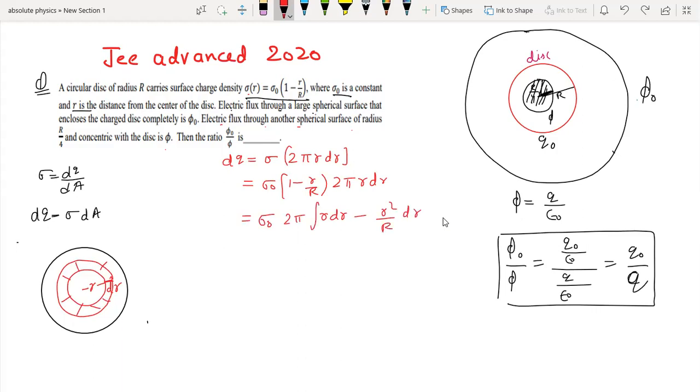Now we integrate dQ. When we integrate, we get sigma naught times 2 pi R squared by 2 minus R cubed by 3. Now we need to put the limits.